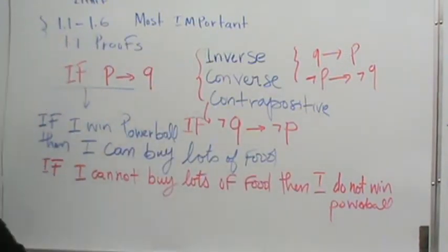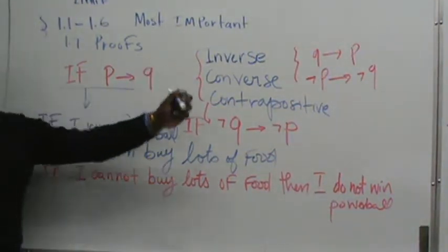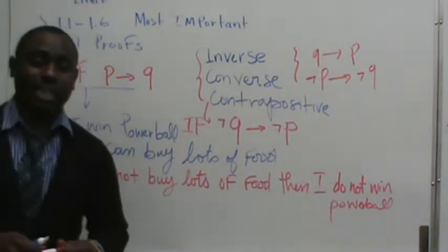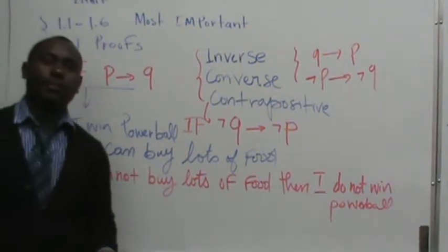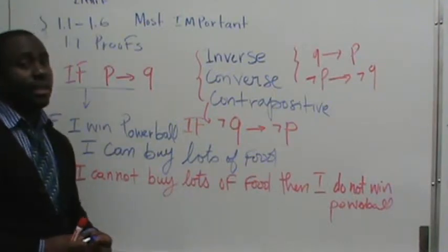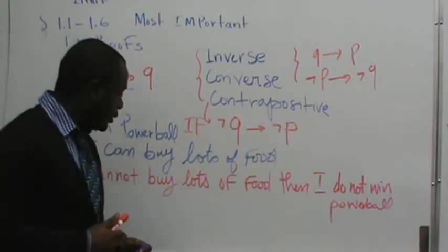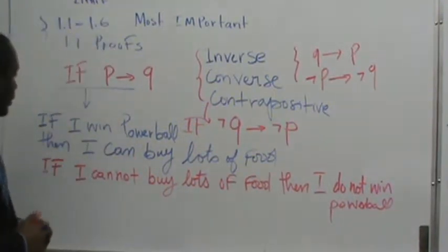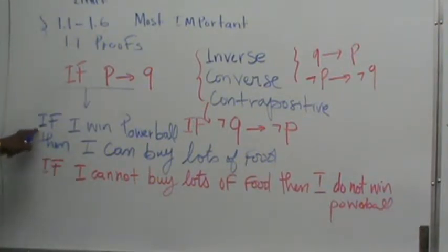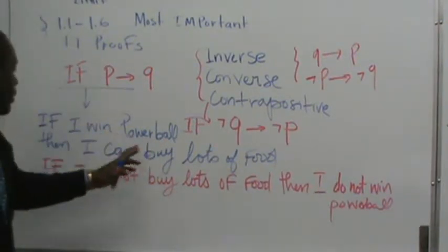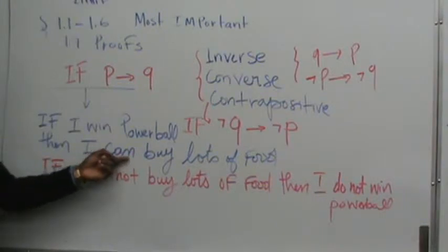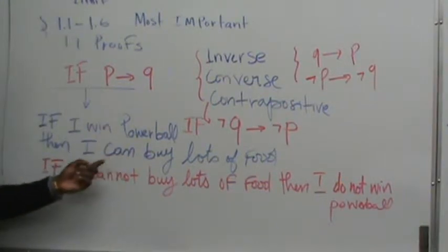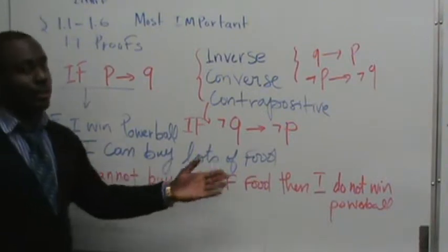So please guys, I do want you to look this up because a typical exam question is I'm going to give you a sentence and I'm going to say hey, find the contrapositive of this sentence, find the inverse of this sentence, find the converse of this sentence. My starting statement is if I win the Powerball, then I can buy lots of food. If I want to write a contrapositive statement, I start with not Q, which was I can buy lots of food. Negate that statement. If I cannot buy lots of food, then I do not win the Powerball.